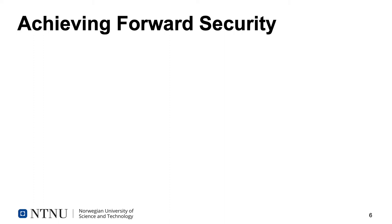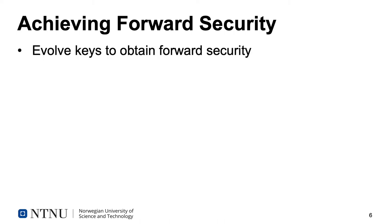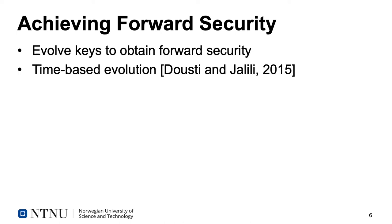Using symmetric keys in the traditional way does not give us forward security, since all of the key material is static. In order to overcome this, we evolve our symmetric keys. If we, after deriving a session key, evolve our long-term symmetric key in such a way that it is not convenient to find the previous version of the key, then any past session will be protected from the symmetric key being compromised. There are essentially two strategies to evolve the key, either time-based or triggered evolution. Time-based evolution was first described by Dusty and Jalili in their paper from 2015. This means that the parties agree that they will evolve their key after a specific amount of time, for example, every day or every hour.